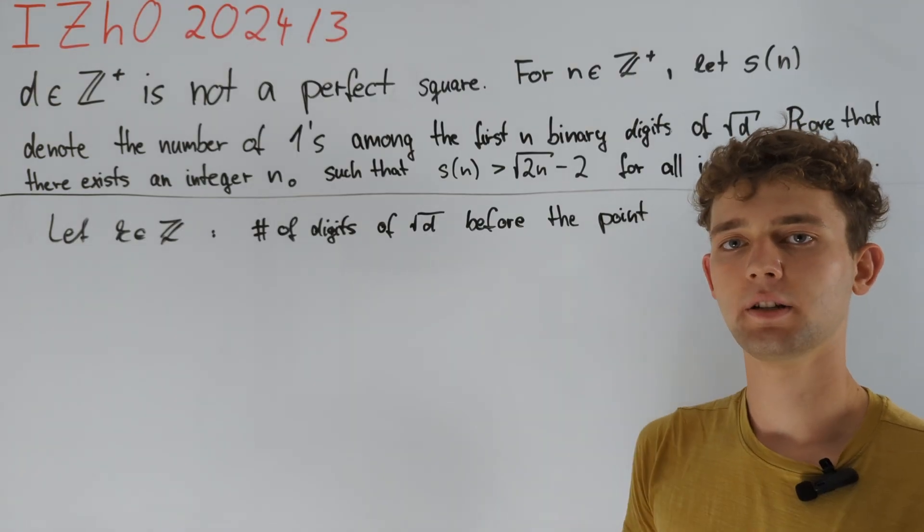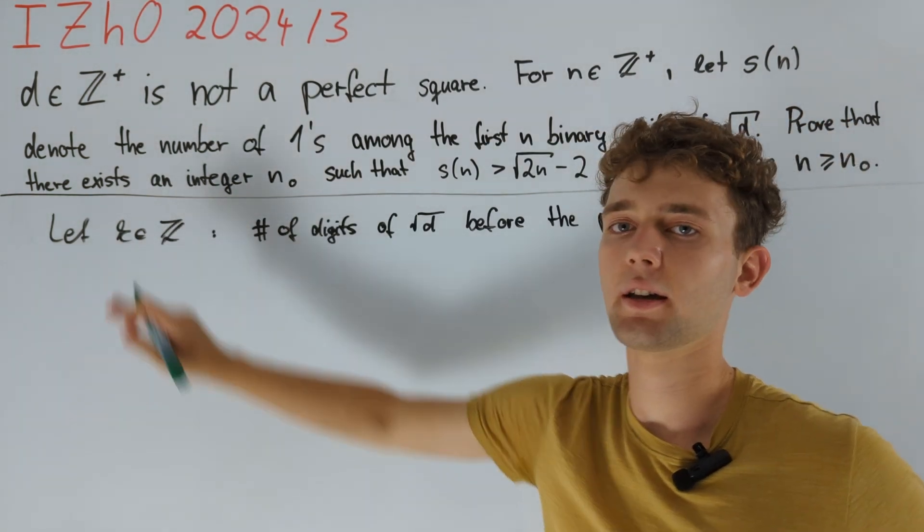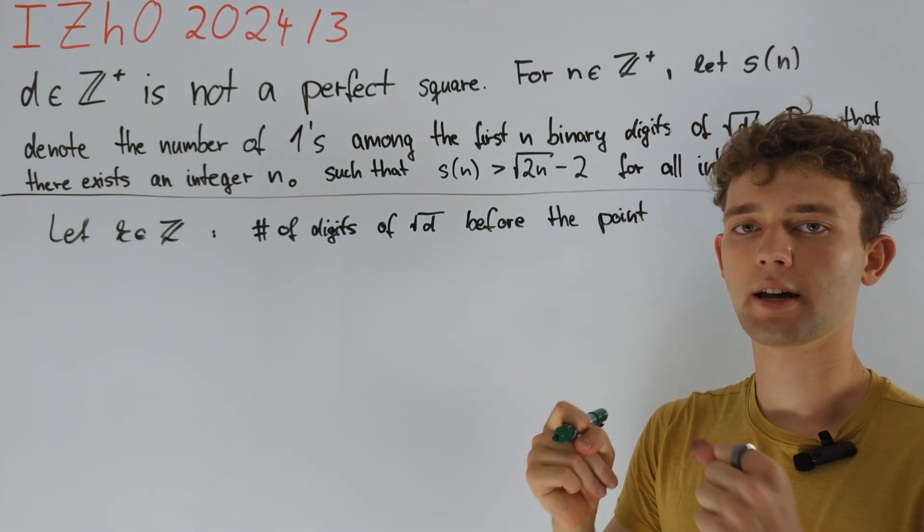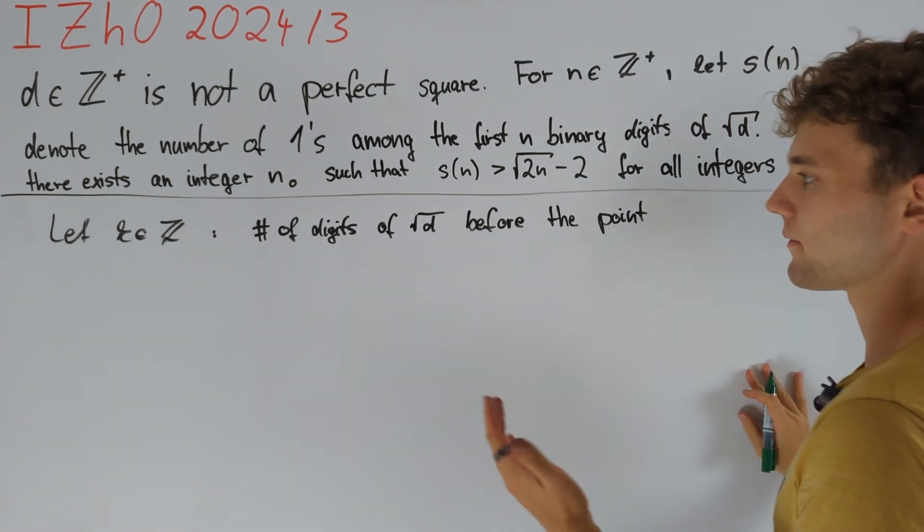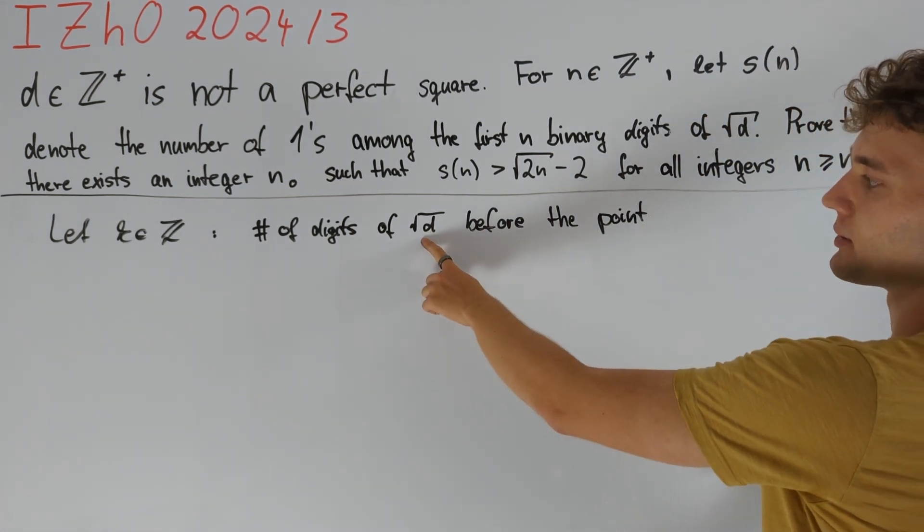Whenever we make a definition in terms of words like we did here for k, we want to also have a formal definition if possible. And here we notice that the first binary digit of square root of d is a 1.